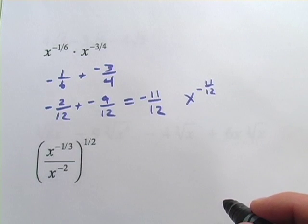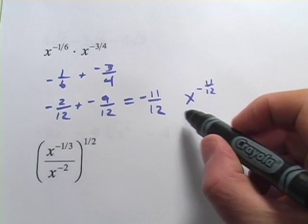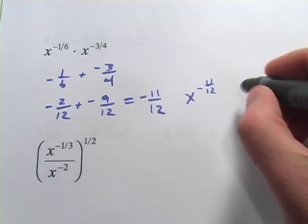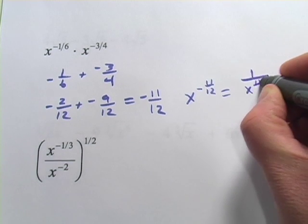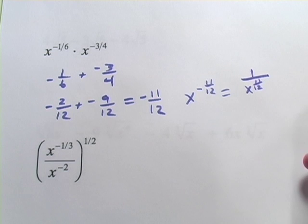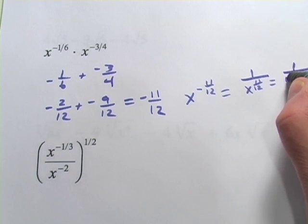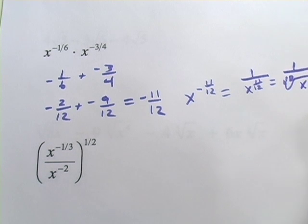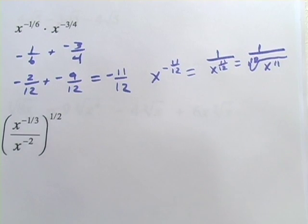We can go a little further with this — you might leave it there depending on what your teacher is asking for. But since this is a negative power, we would rewrite that as one over x to the eleven-twelfths. And you might write that as one over the twelfth root of x to the eleventh. All of those would be equivalent.